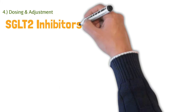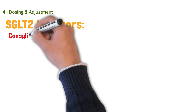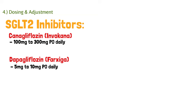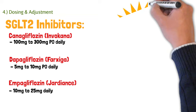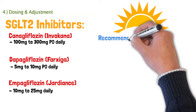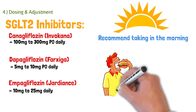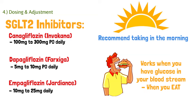Now let's talk about dosing. All SGLT2 inhibitors are dosed once daily. Canagliflozin (brand name Invokana) is 100–300 mg by mouth daily. Dapagliflozin (Farxiga) is 5–10 mg by mouth daily. Empagliflozin (Jardiance) is 10–25 mg daily. An important counseling point: recommend taking this medication in the morning before breakfast. Anytime a patient eats, glucose increases in the bloodstream, so taking it early in the morning allows it to capture the glucose from all the meals eaten throughout the day.